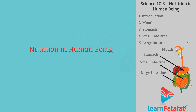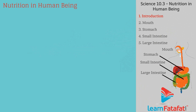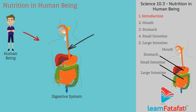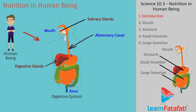Nutrition in human beings takes place with the help of the digestive system, which includes the alimentary canal and digestive glands. The alimentary canal is a long tube-like structure extending from mouth to anus. Digestive glands include salivary glands, liver, the pancreas, and gastric glands.